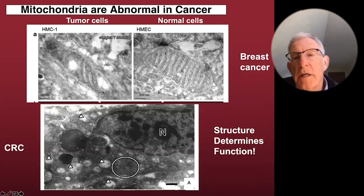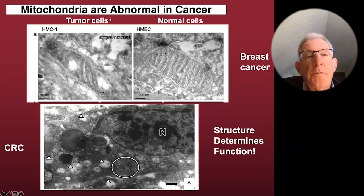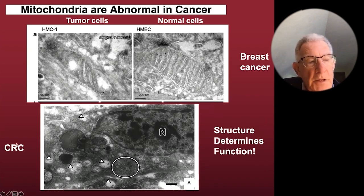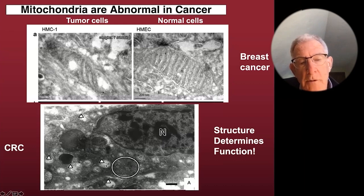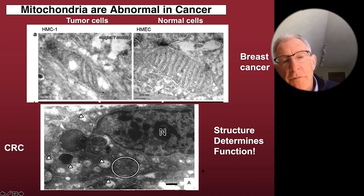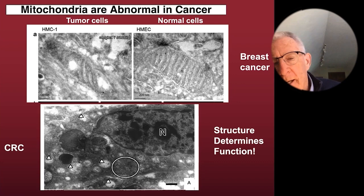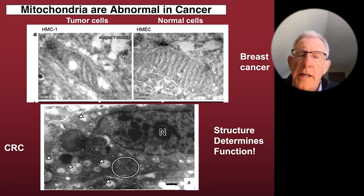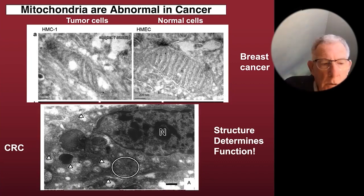Here's an example of breast cancer — these are breast tumor cells versus normal breast epithelial cells. You can see the normal cell has the nice stripes, the cristae, whereas the mitochondria in the breast tumor have these big holes, this cristolysis, abnormal cristae. This here — CRC is colorectal cancer — you can see these ghost mitochondria. Structure determines function. If the structure of the organelle is abnormal, the function of that organelle will be abnormal.